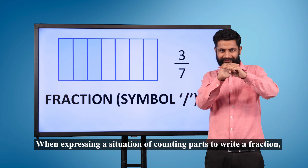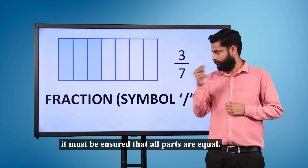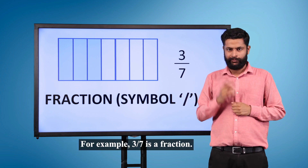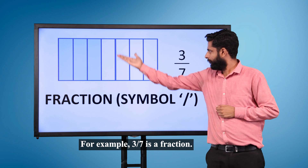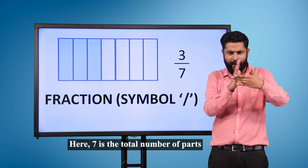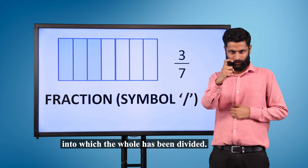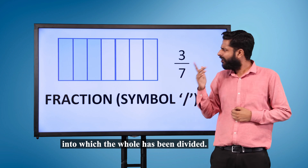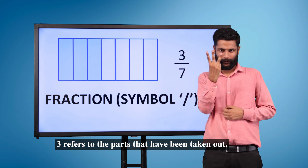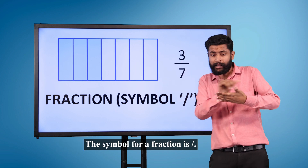it must be ensured that all parts are equal. For example, three by seven is a fraction. Here, seven is the total number of parts into which the whole has been divided. Three refers to the parts that have been taken out. The symbol for a fraction is forward slash.